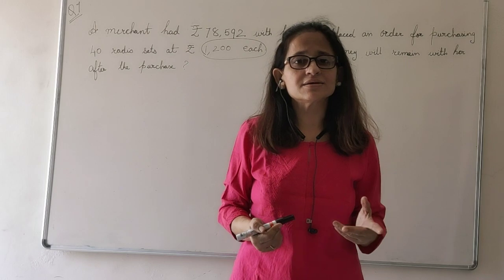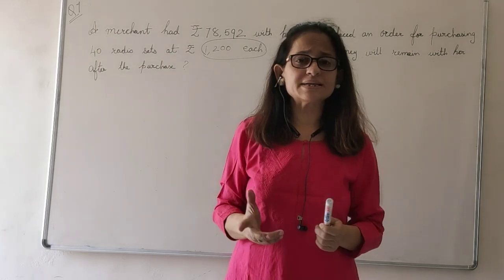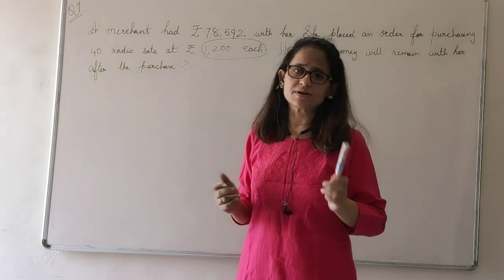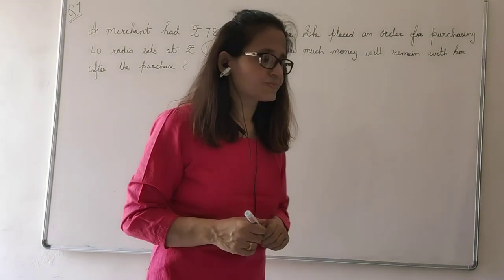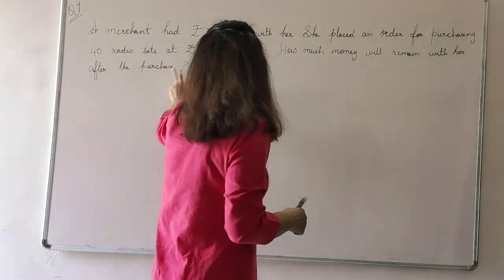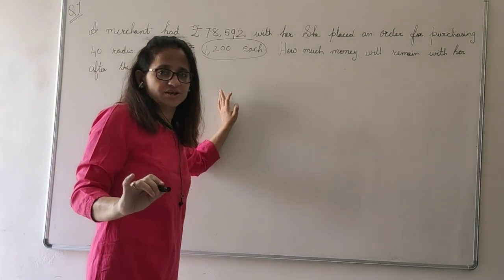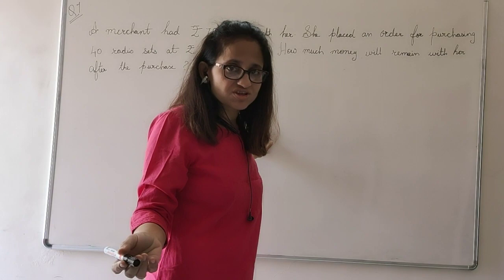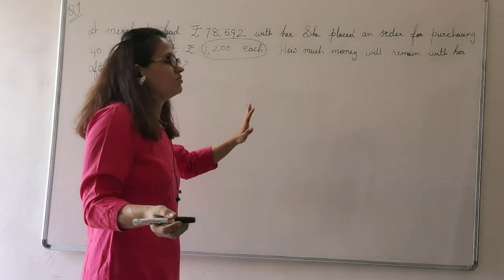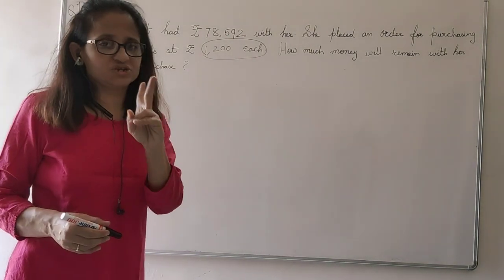How will we find the price of 40 radio sets? By multiplying 1200 with 40. We will get the price of 40 radio sets. How much money will remain with her after the purchase? So after purchasing 40 radio sets, after giving the factory the money for 40 radio sets, how much money will remain with her?